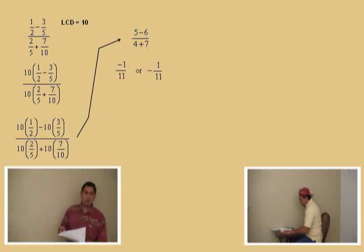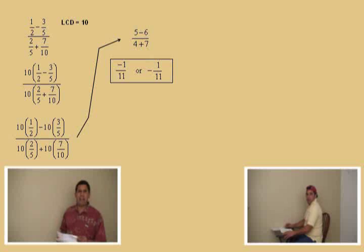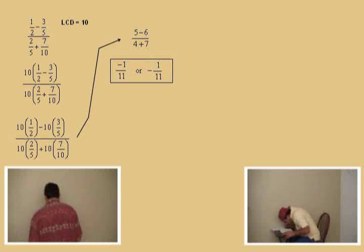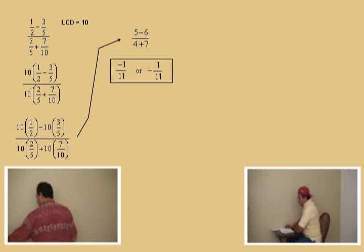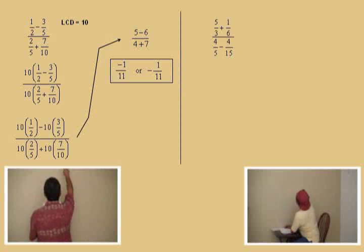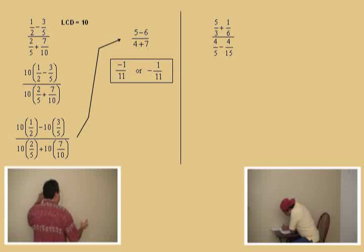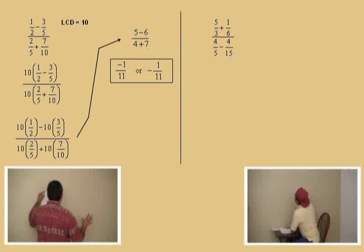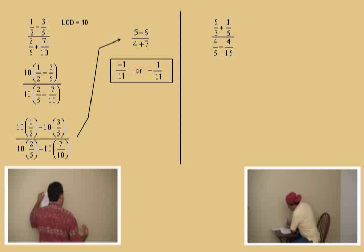So we've got one more problem for our fraction review. Here it is. It's basically along the same lines: five-thirds plus one-sixth over four-fifths minus four-fifteenths. There it is. Now, remember, Charlie, we want to clear the fractions by using the lowest common denominator. And what is this? Charlie, notice our denominators up there: 3, 6, 5, and a 15. They're all different here. What is the smallest number that all those denominators divide evenly into?